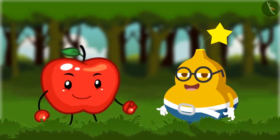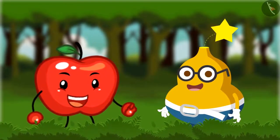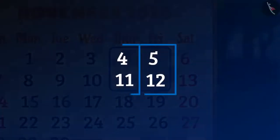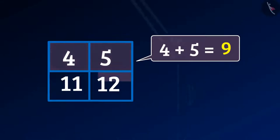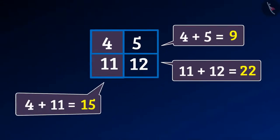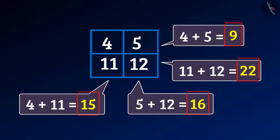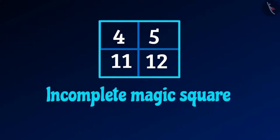Fruity says: let me tell you one more interesting thing. Look at this square — you can see that the sum of the first row, second row, first column, and the last column is not the same. Hence this is an incomplete magic square.